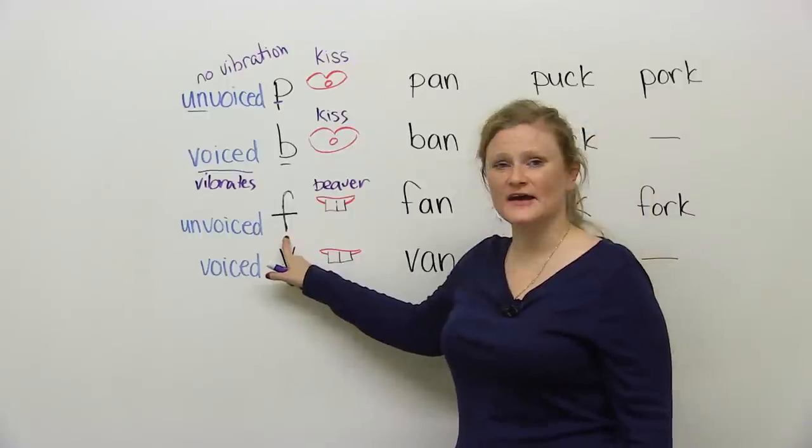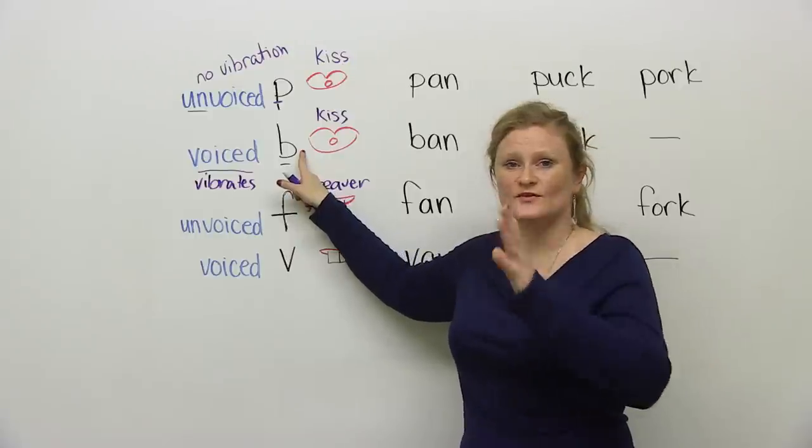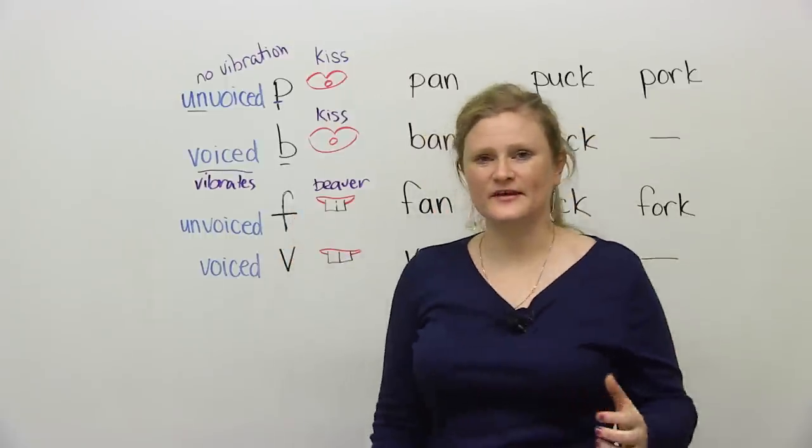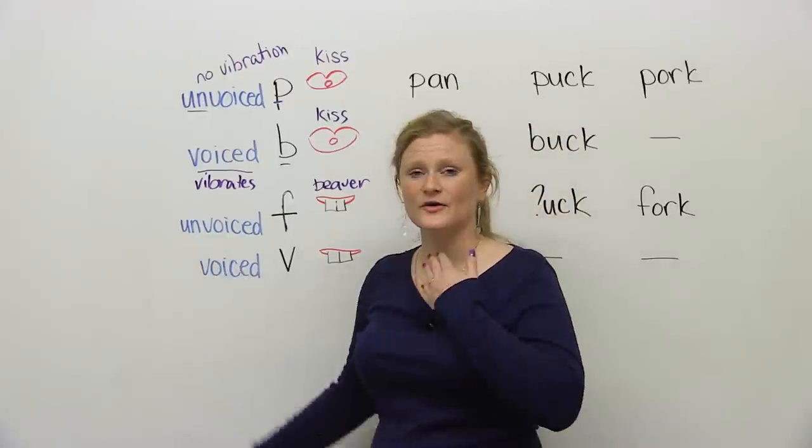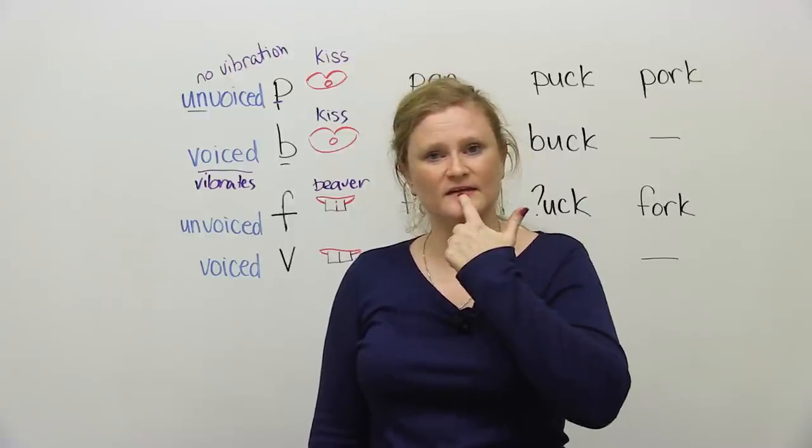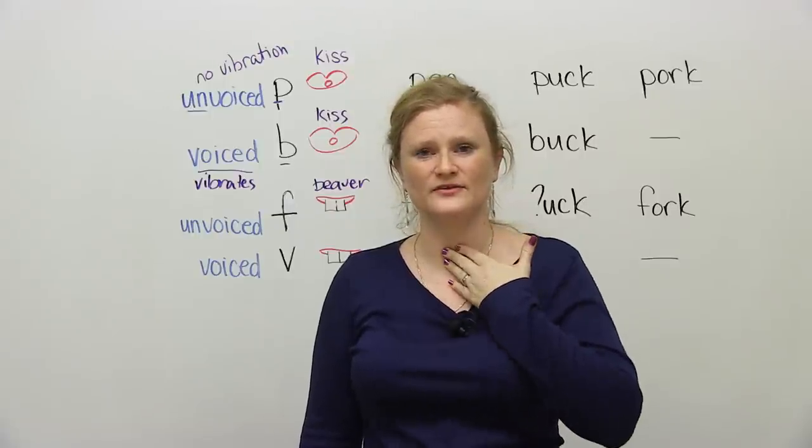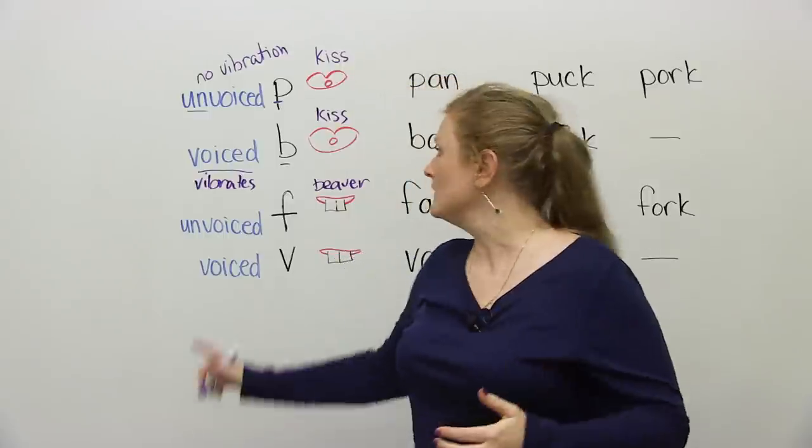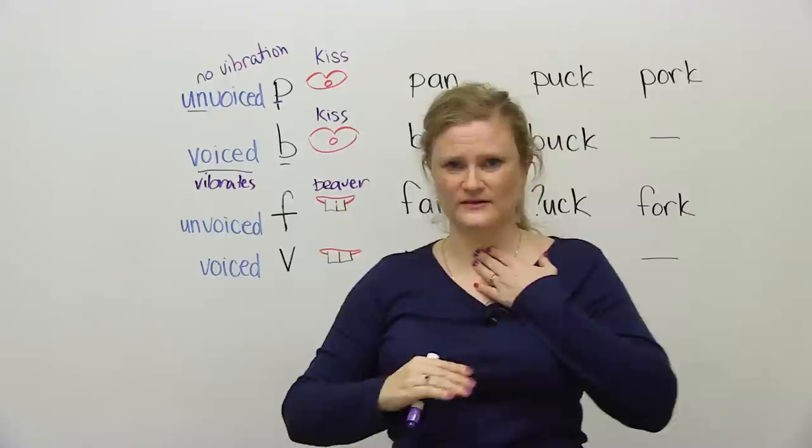So this sound is very different from the P and the B sound because first of all, your mouth is making a different position. When you make the F sound, your teeth are out and it is unvoiced. So again, you're going to put your hand on your throat and go F. The air is going to come out at the bottom of your teeth, between your bottom lip and your top teeth. So it feels like you're pushing the air down. With the P and the B, you're pushing the air out like you're smoking. With the F, the air is going down.